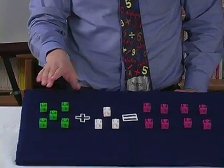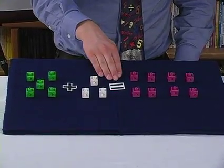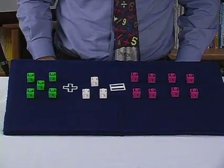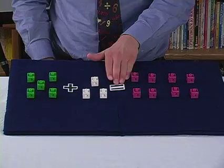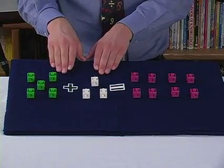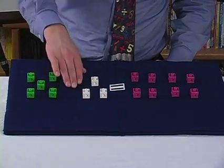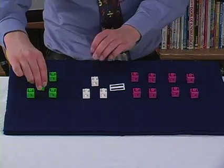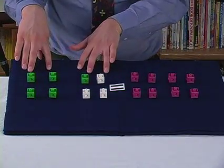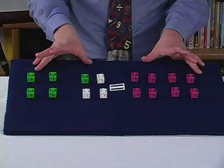Take this equation for example. I have 5 plus 3 is equal to 8. What the equal sign is saying, that 5 plus 3 is the same as 8. And that's true. I have 8 blocks on both sides of the equation.